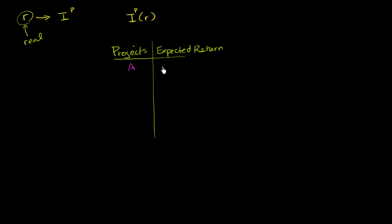And let's say project A has an expected return of 20%. B, 18%, C, 16%, I'll do a couple more, D, 10%, E is 5%, and then F is, let's say F is 2%.